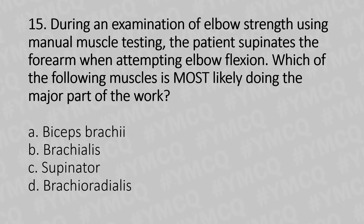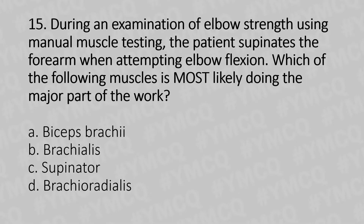Moving to our 15th question. During an examination of elbow strength using manual muscle testing, the patient supinates the forearm while attempting elbow flexion. Which of the following muscles is most likely doing the major part of the work? Option A: biceps brachii, Option B: brachialis, Option C: supinator, Option D: brachioradialis.